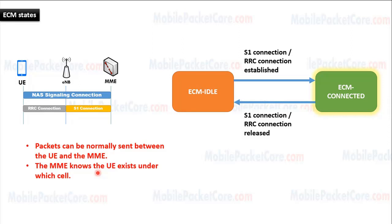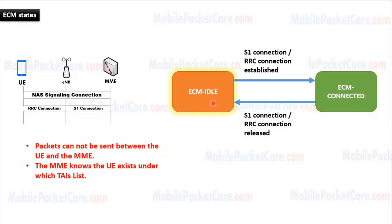Now let's learn ECM idle state. If the NAS signaling connection between the UE and the MME — which is composed of the S1 connection and the RRC connection — is not established or broken, the UE will move to ECM idle state. The NAS signaling connection may be released due to many reasons. For example, the eNodeB or the MME may release the S1 signaling connection in order to save network resources in case the UE has had no activity for a long period of time.